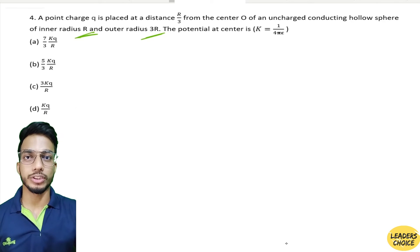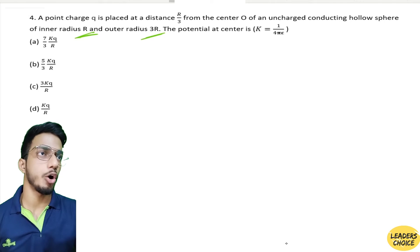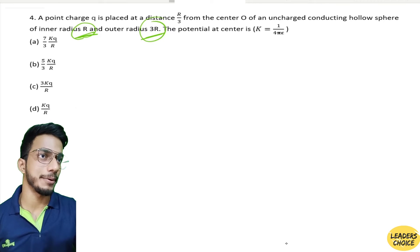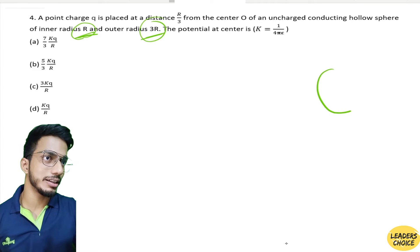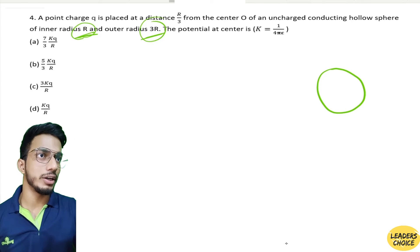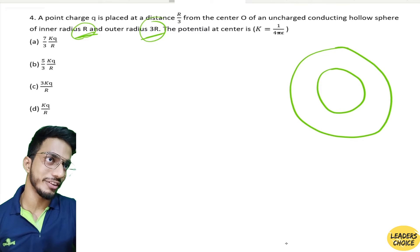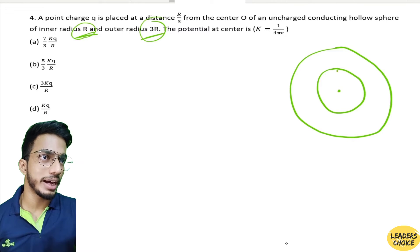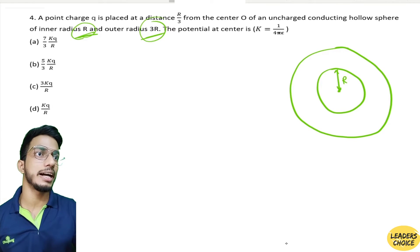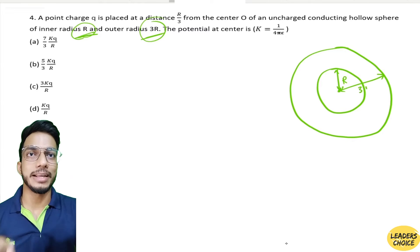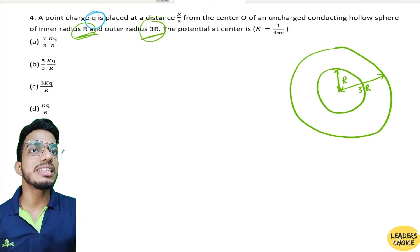Let me explain first. We have a hollow sphere — the inner radius is r and the outer radius is 3r. It is a thick hollow sphere. I will consider the inner radius and outside it will be the outer radius. The inner radius is r and the outer radius is 3r. Next, charge +q is placed at r/3 from center.